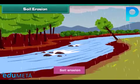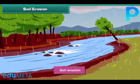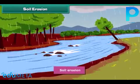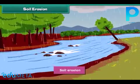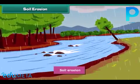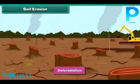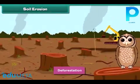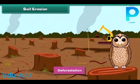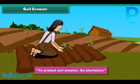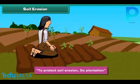Do you know what soil erosion is? Sometimes the soil is carried away by wind and water — this is called soil erosion. You will be surprised to know that cutting of trees also causes soil erosion. Soil erosion makes land infertile. We can protect against soil erosion by planting more and more trees.